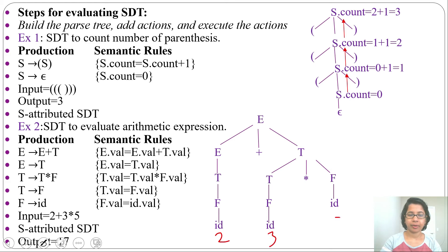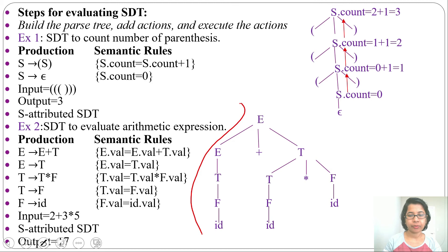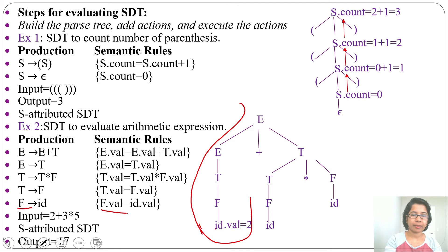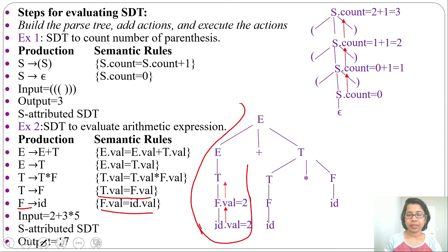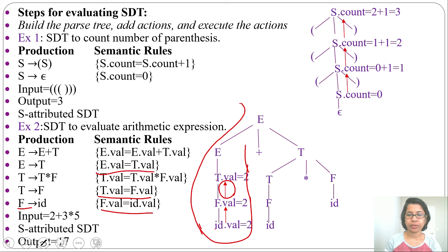We assign lexical values: 2 for the first id, 3 for the second id, and 5 for the third id. Traversing in post-order, we reach the leftmost id with value 2. Reducing id to F: F.value = id.value = 2. Reducing F to T: T.value = F.value = 2. Reducing T to E: E.value = T.value = 2.